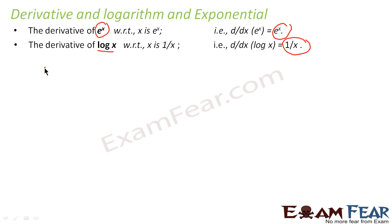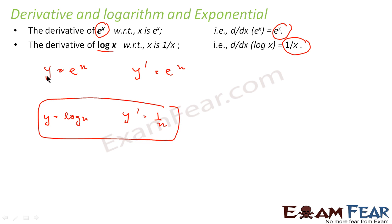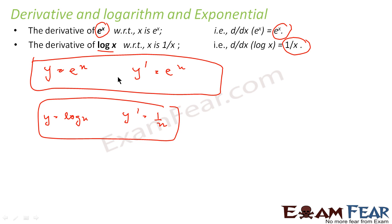I do not have a proof for this, but just remember: if y equals e to the power x, y dash is e to the power x itself. If y equals log x, y dash is 1 by x. Please remember these two formulas — for e to the power x, differentiation gives no change; it is e to the power x itself.